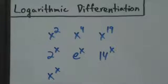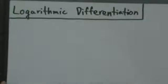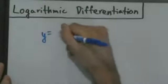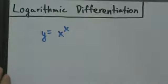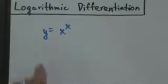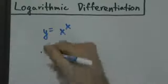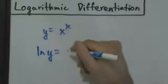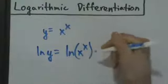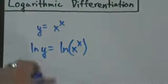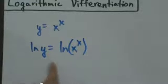We'll see how it works with the x to the x example. It's not really a new formula; it's just another application of the chain rule. So let's start with y equals x to the x. We want to make sure y is already by itself first. Once we have that done, we can take the natural log of both sides: natural log of y equals natural log of x to the x. Once y is by itself, that's always the next step — take the natural log of both sides.